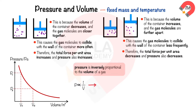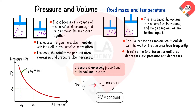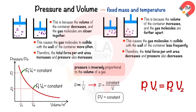We can write the equation of the graph as P1V1 equals P2V2, where P1 is the initial pressure, V1 is the initial volume, P2 is the final pressure, and V2 is the final volume.